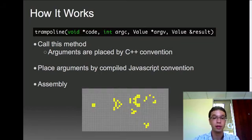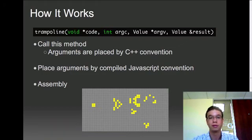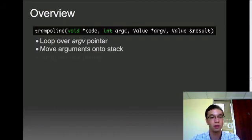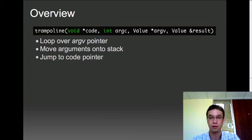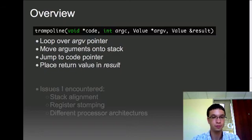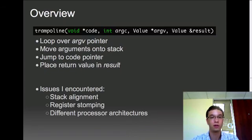Now assembly was a new thing for me because in school, when I learned assembly, I used it to program little toy examples like Conway's Game of Life, which is fun, but programming in real life x86 assembly is very different. There's a lot more things you have to worry about. So what the assembly code that I wrote does is it loops over this argv pointer, moves each argument onto the call stack in the right order, and then jumps into the passed in code pointer. And when it returns back out, when the JavaScript function returns back out, it takes the return value and puts it in the result, stores it in the result variable.